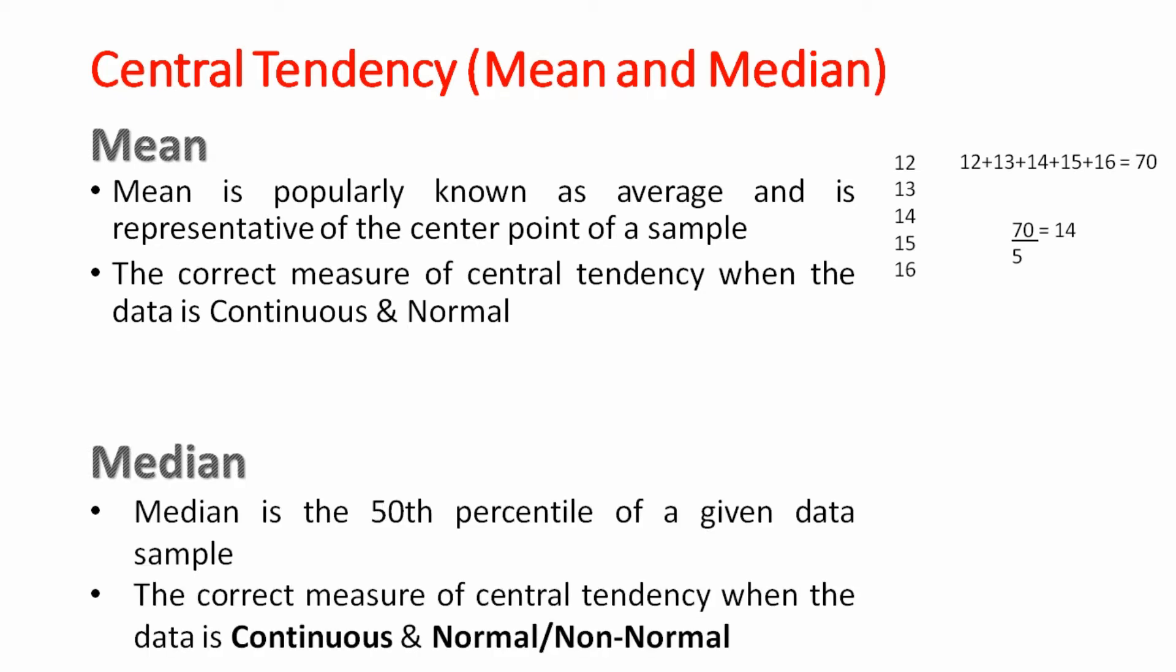Next is median. Median is the 50th percentile of a given data sample. The correct measure of central tendency when the data is continuous, normal or non-normal. Let us take an example. In the same data set, 12, 13, 14, 15, 16. The central point is 14. So the median is 14.